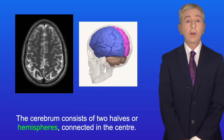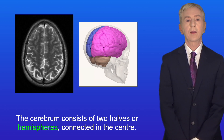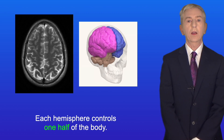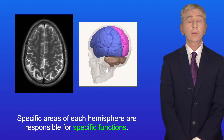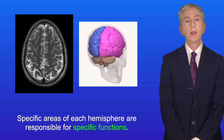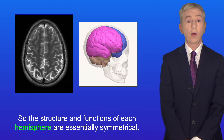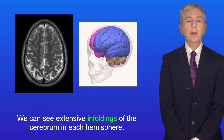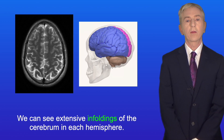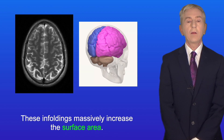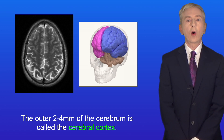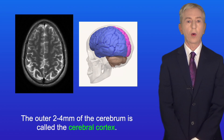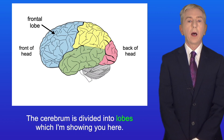The cerebrum consists of two halves or hemispheres connected in the center. Each hemisphere controls one half of the body, and specific areas of each hemisphere are responsible for specific functions, so the structure and functions of each hemisphere are essentially symmetrical. We can see extensive infoldings of the cerebrum in each hemisphere, which massively increase the surface area. The outer two to four millimeters of the cerebrum is called the cerebral cortex, and the cerebrum is divided into lobes.